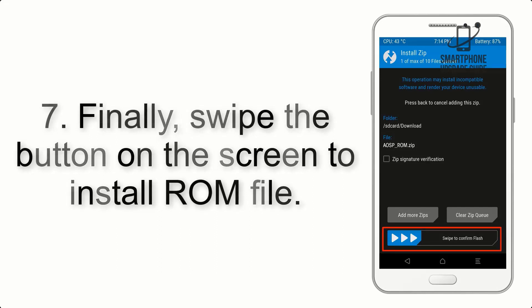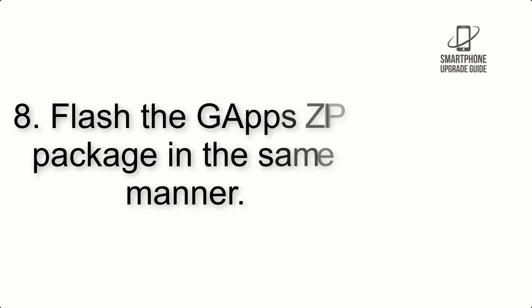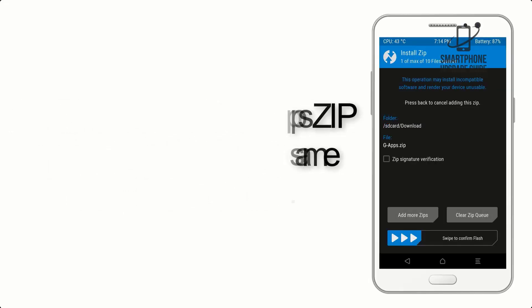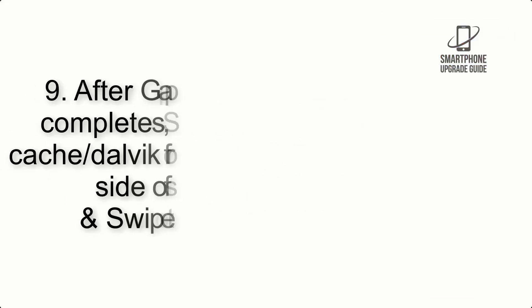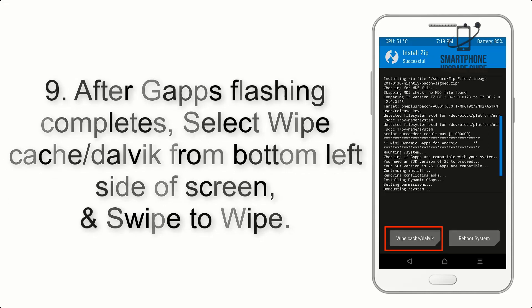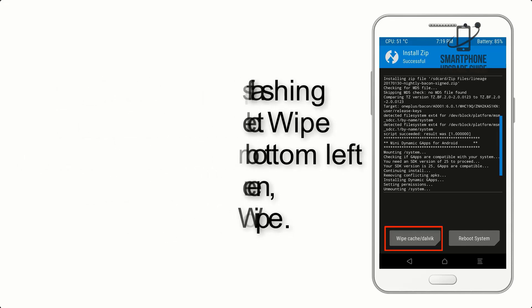Step 7: swipe the button on the screen to install the ROM file. Step 8: flash the GApps zip package in the same manner. Step 9: after GApps flashing completes, select Wipe Cache and Dalvik from the bottom left side of the screen and swipe to wipe.